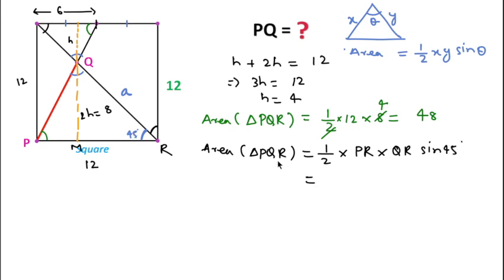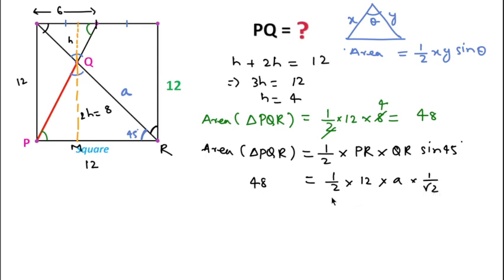We calculated the area of triangle PQR is 48, so we write: 48 equals one-half times PR times QR times sin(45°), which gives 48 equals one-half times 12 times a times 1 over root 2. Solving this, a equals 8 root 2 units. So QR equals 8 root 2.